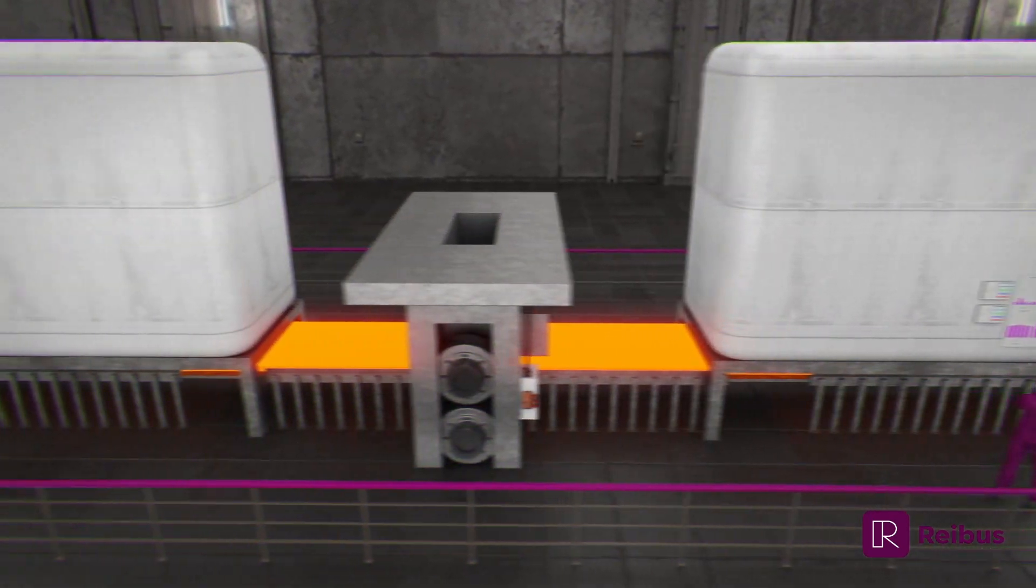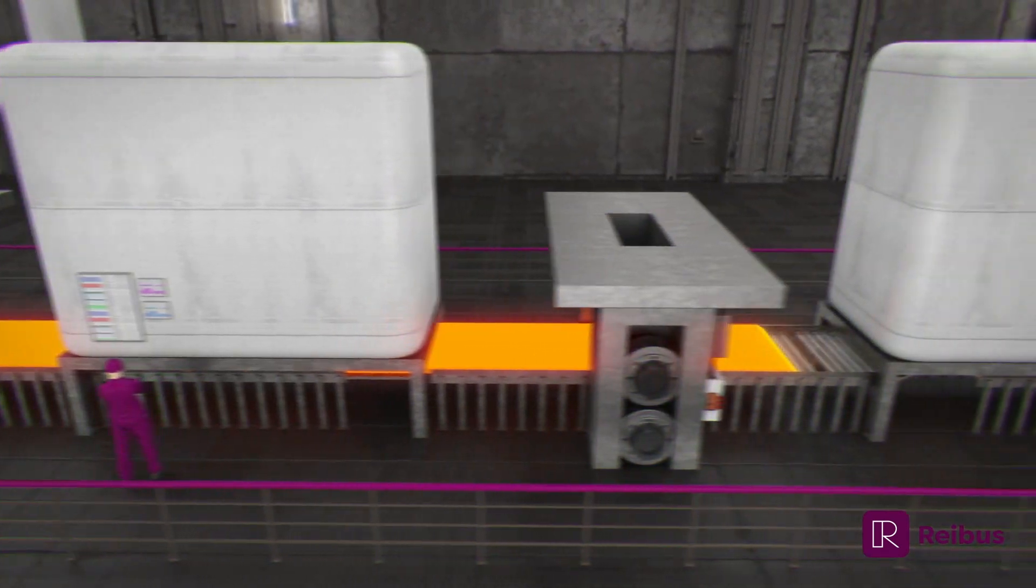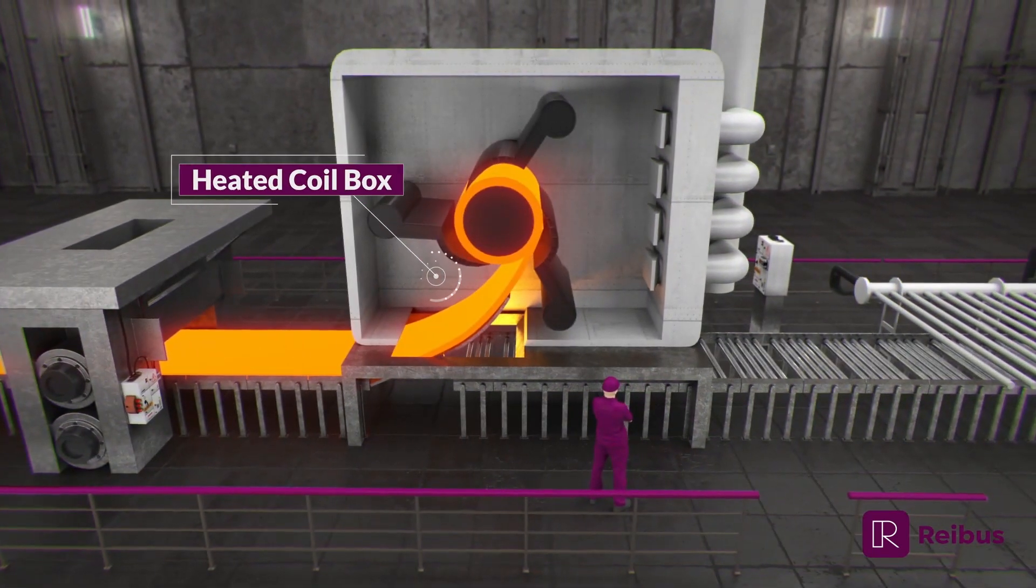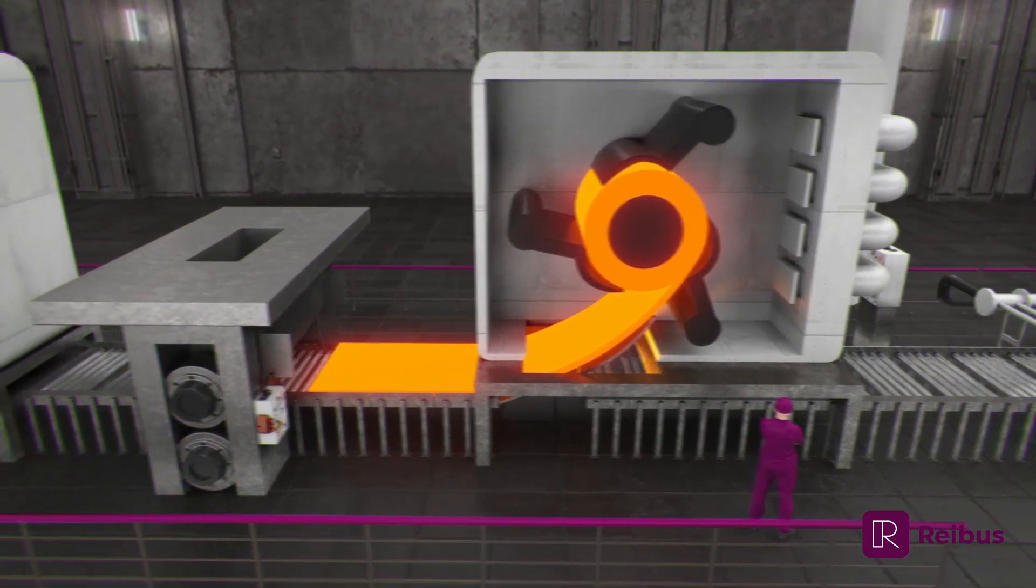The hot slab or bloom then enters the roughing mill to begin reducing the slab's thickness. As the slab is reduced in thickness, its length increases as its as-casted microstructure breaks down.